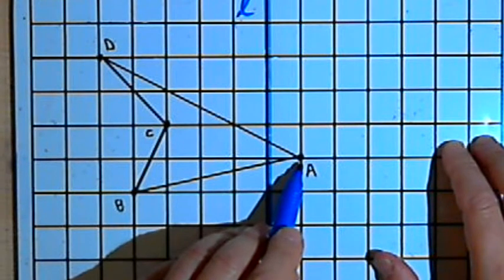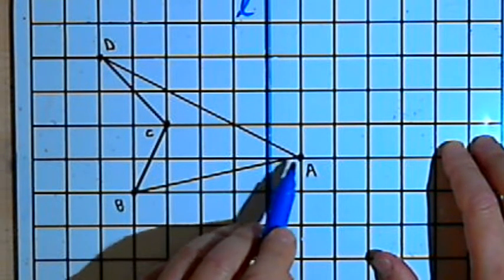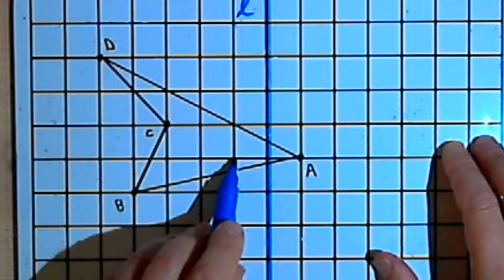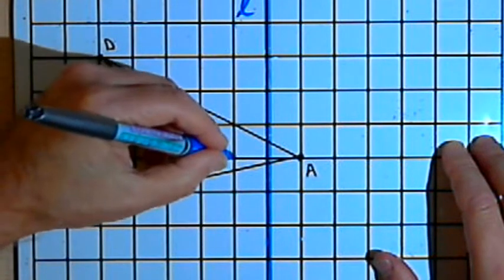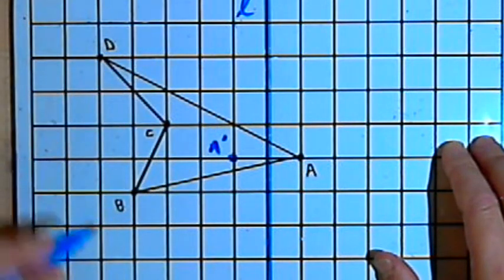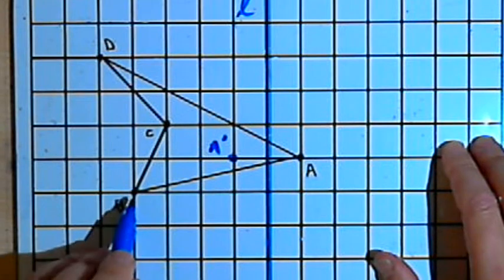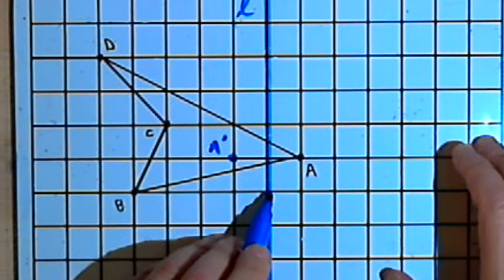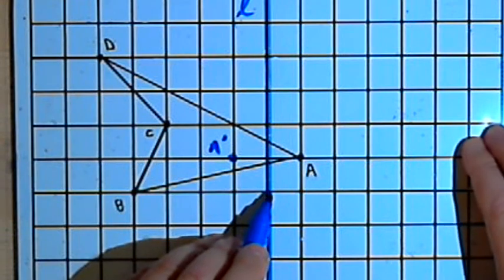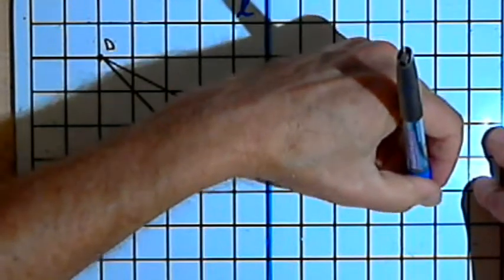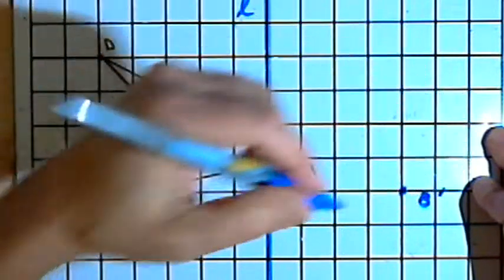So what I want to do is start at point A and find the distance from point A to line L, and then go, that's one unit, go one unit further in the same direction, and I'll label that as point A prime. I'll do the same thing for point B. Point B is one, two, three, four units from line L. I'll go four units further and that will get me to B double prime.